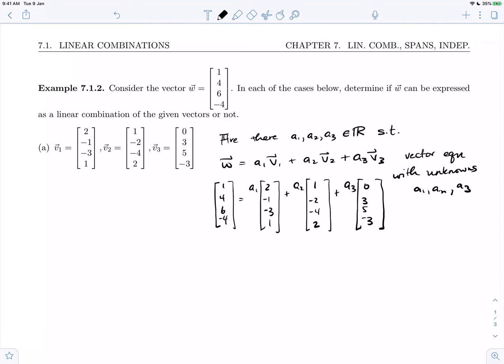Now how do we solve this vector equation? We can read across the components. Putting the unknowns on the left hand side: 2a1 plus a2 plus 0a3 equals 1. Second component: minus a1 minus 2a2 plus 3a3 equals 4. Third component: minus 3a1 minus 4a2 plus 5a3 equals 6.